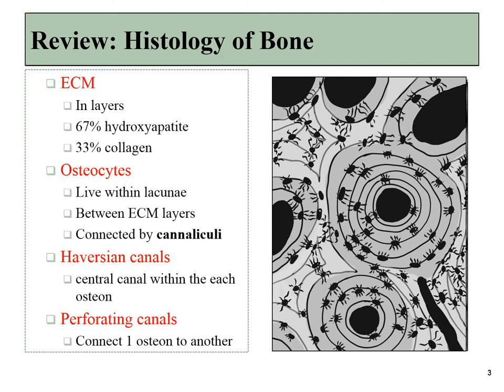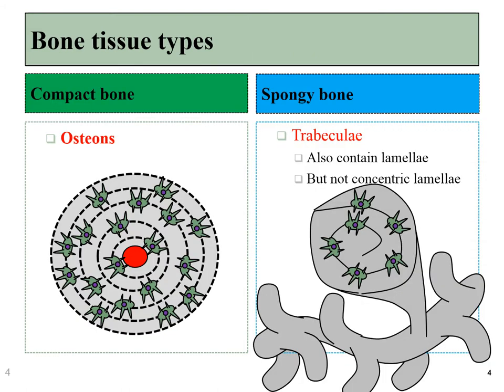Spongy bone is even more vascular, because all of the space between trabeculae is often filled with red bone marrow. So if osteons have extracellular matrix laid down in concentric layers, trabeculae are similar — they have layers of extracellular matrix, but they're not laid down in a concentric fashion. Instead, the pattern is more spiral.